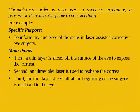For example, if your specific purpose is to inform the audience of the steps in laser-assisted corrective eye surgery, you can use such main points. First, a thin layer is sliced off the surface of the eye to expose the cornea. Second, an ultraviolet laser is used to reshape the cornea. Third, the thin layer sliced off at the beginning of the surgery is reaffixed to the eye.